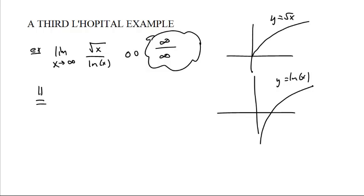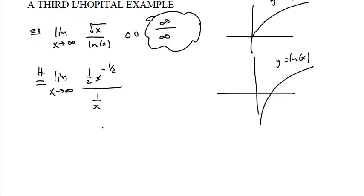Well, because it's going to infinity over infinity, we can use L'Hopital's rule. That is x to the 1 half power, which is 1 half x to the negative 1 half power. And the derivative of natural log of x is 1 over x. Okay, dividing by 1 over x is the same thing as multiplying by x over 1.